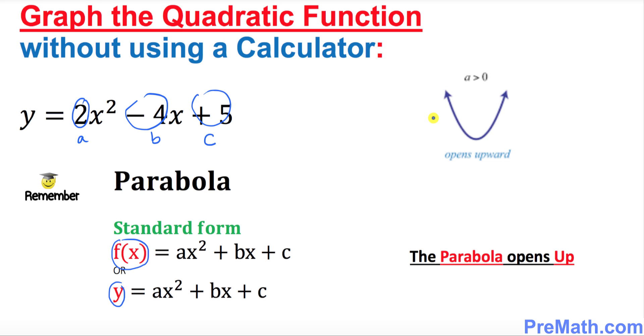One more thing: our graph of our given function is going to open upward. It's going to open upward because our leading coefficient a, which is 2, is a positive number.